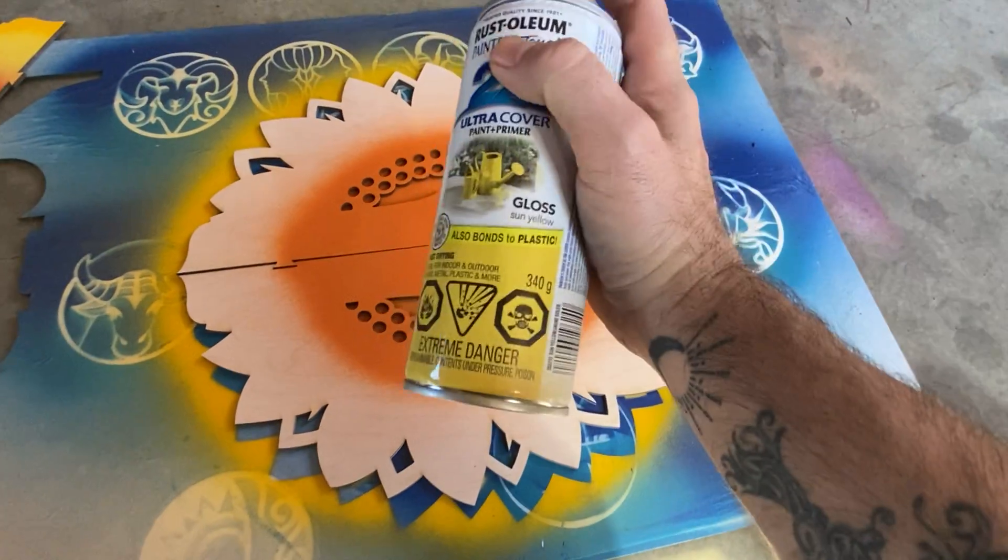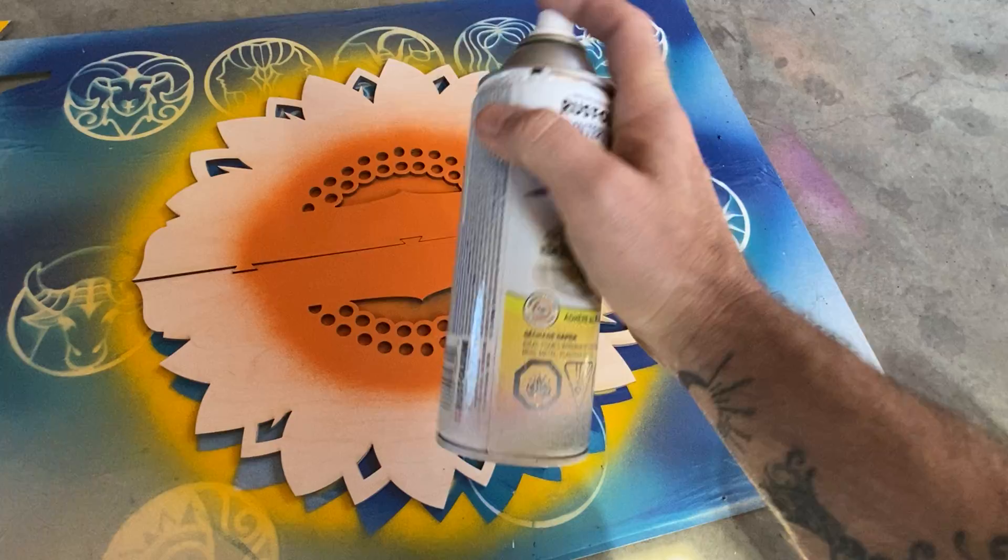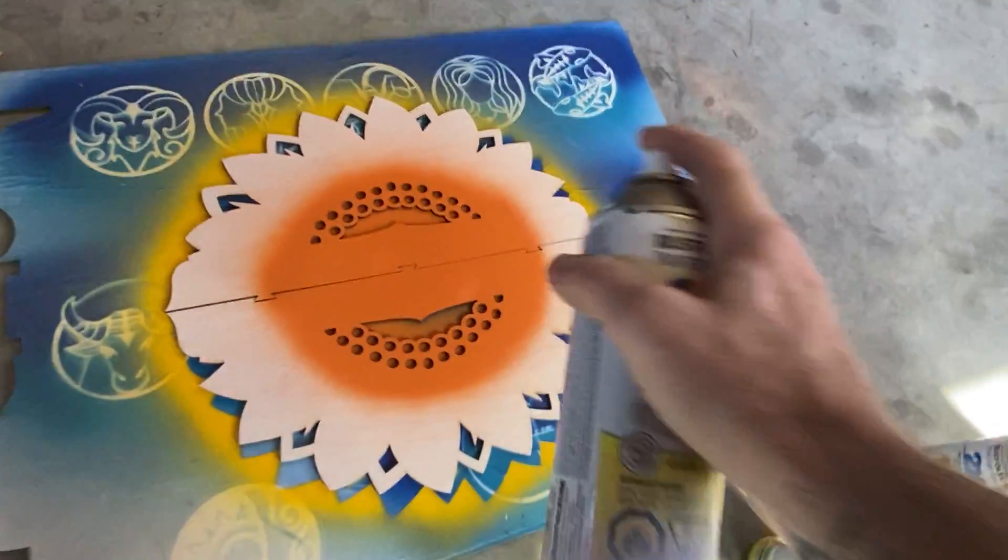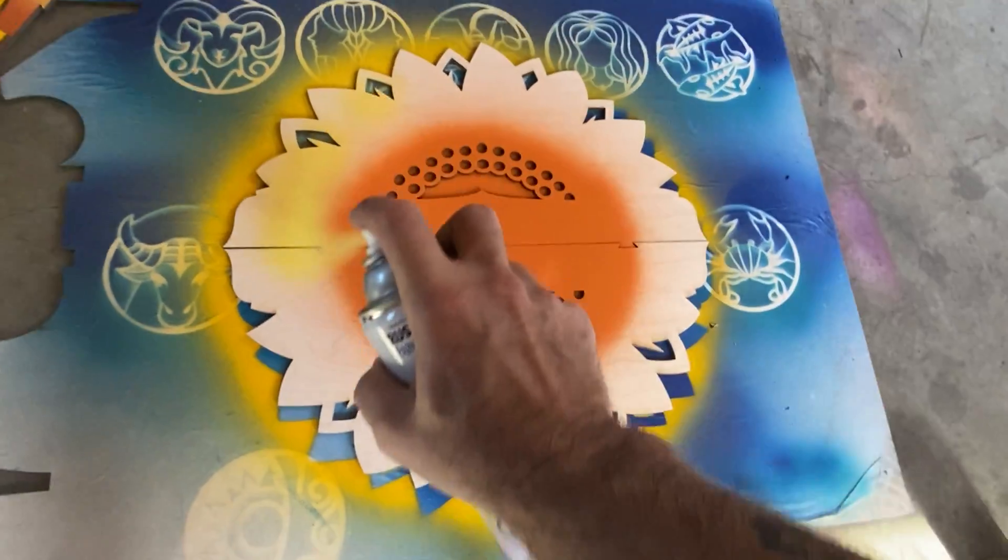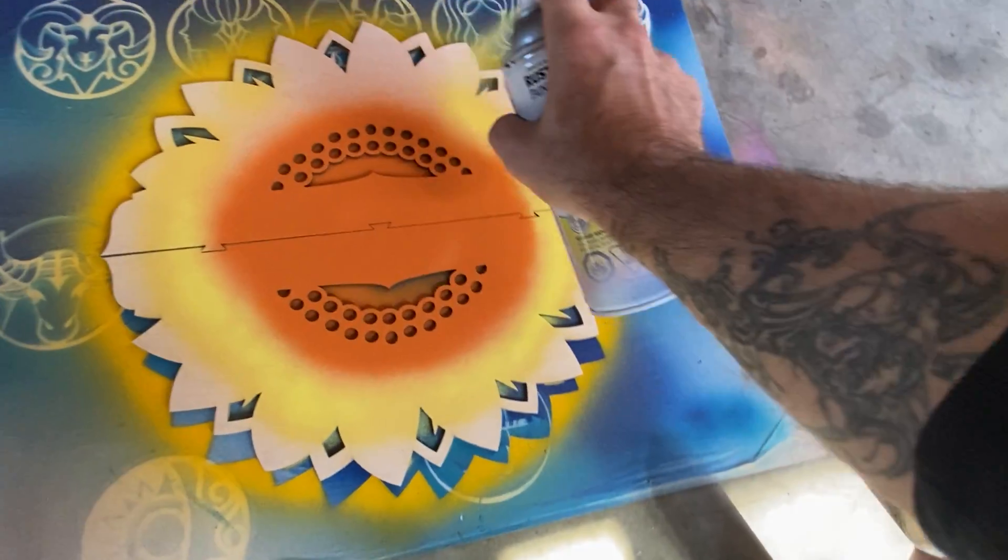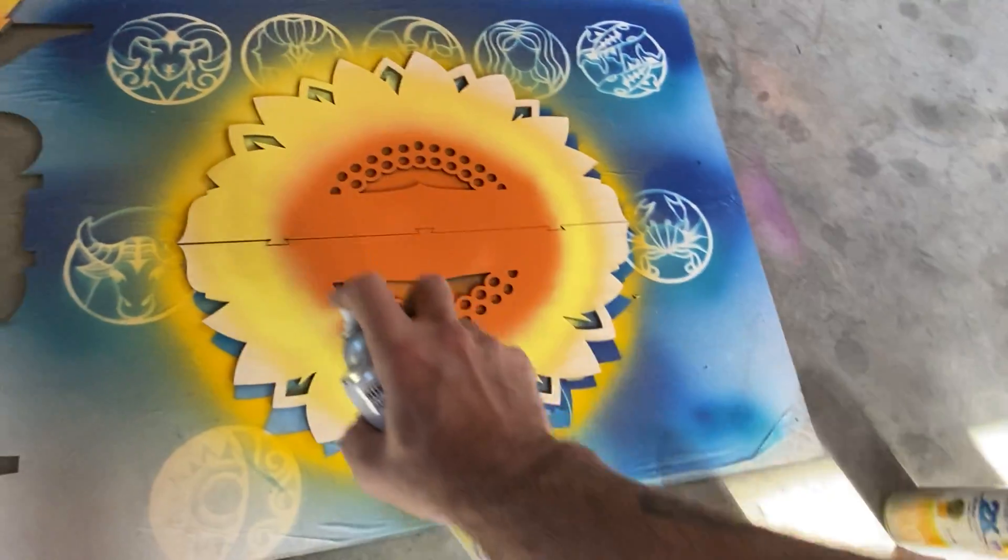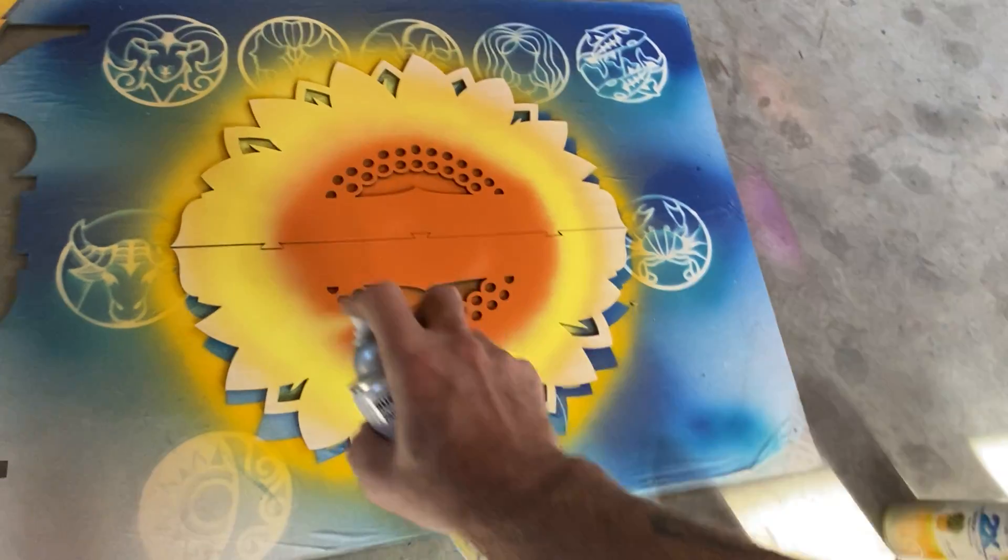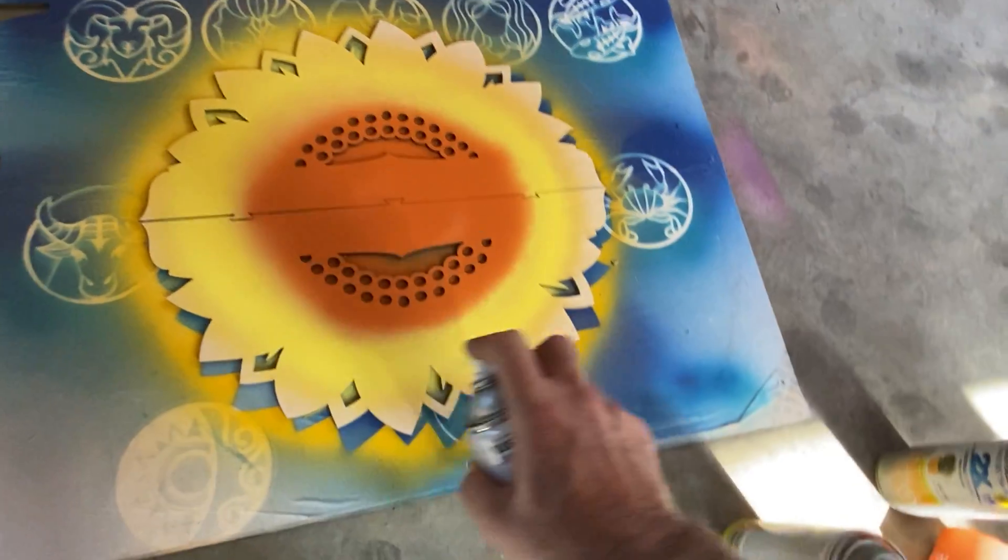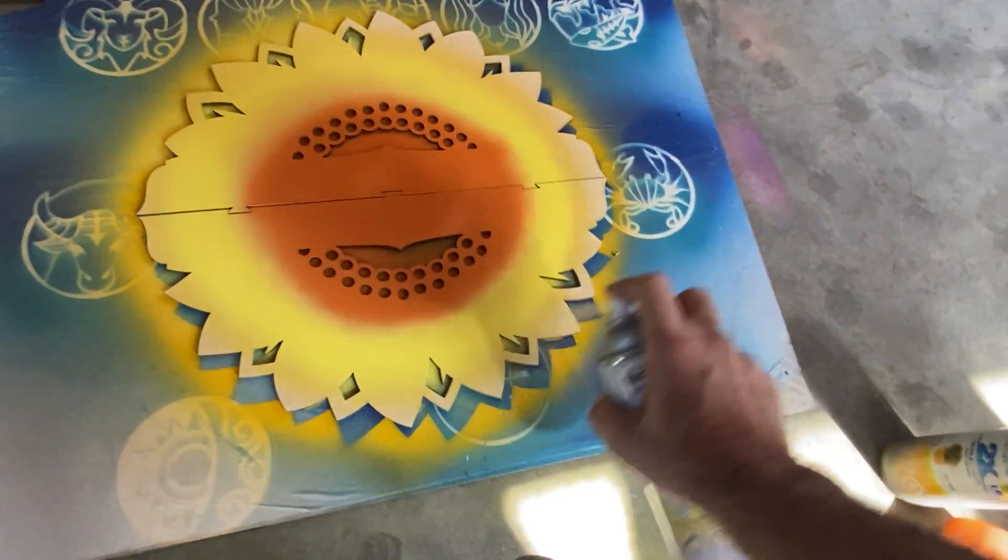And then I'm going to go with the sunset yellow, and we're going to create the second spot. And I just go in a circular motion around, kind of overspraying into the orange a bit.